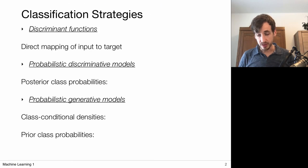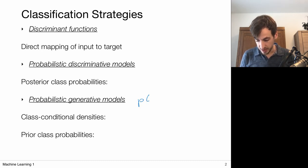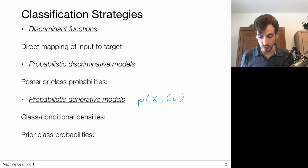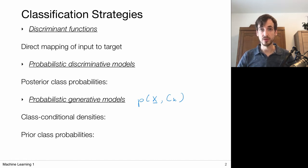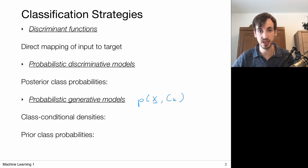We started this video series on classification with going over the theory of decision making, and the theory essentially told us that if we know the joint probability distribution that generated my data — these data point pairs, input-class pairs — if we know this distribution then we know how to make our decisions.